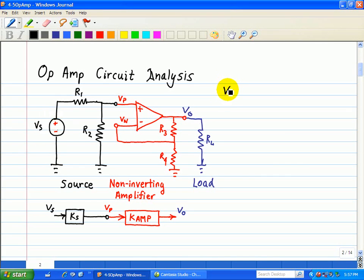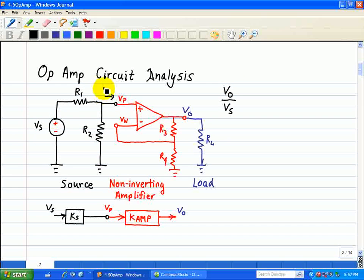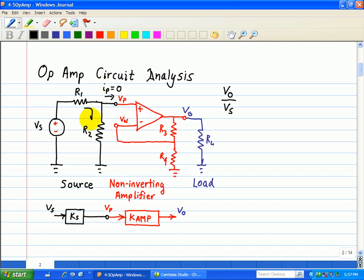So we want to find the relationship, a mathematical relationship, between V0, our output, over our input Vs. First we recognize that this is a voltage divider since we know that IP, the current going into the non-inverting input, is equal to zero since it has infinite input impedance. So all of the current going through R1 is going to R2, so we can use the voltage divider to find Vp.